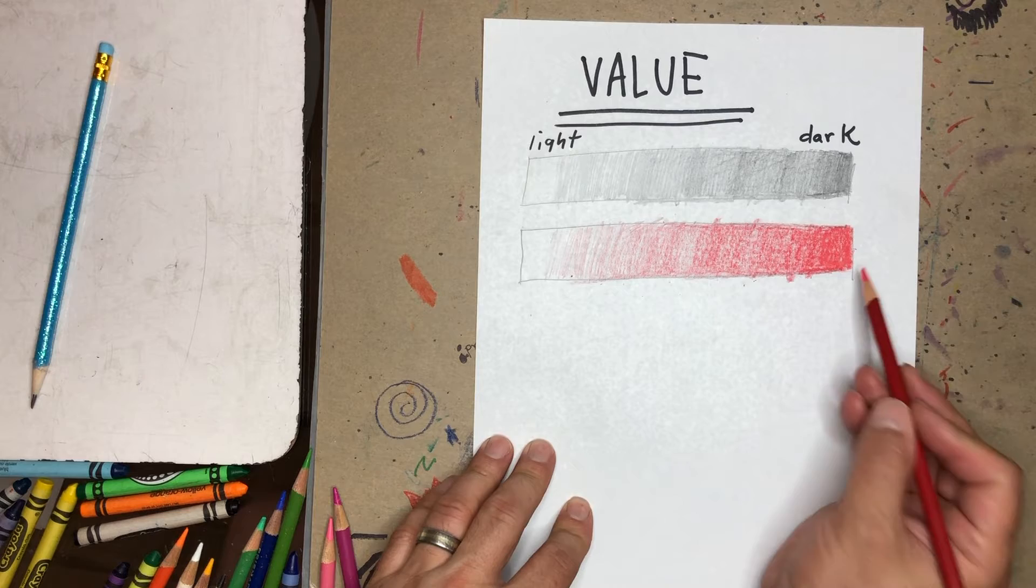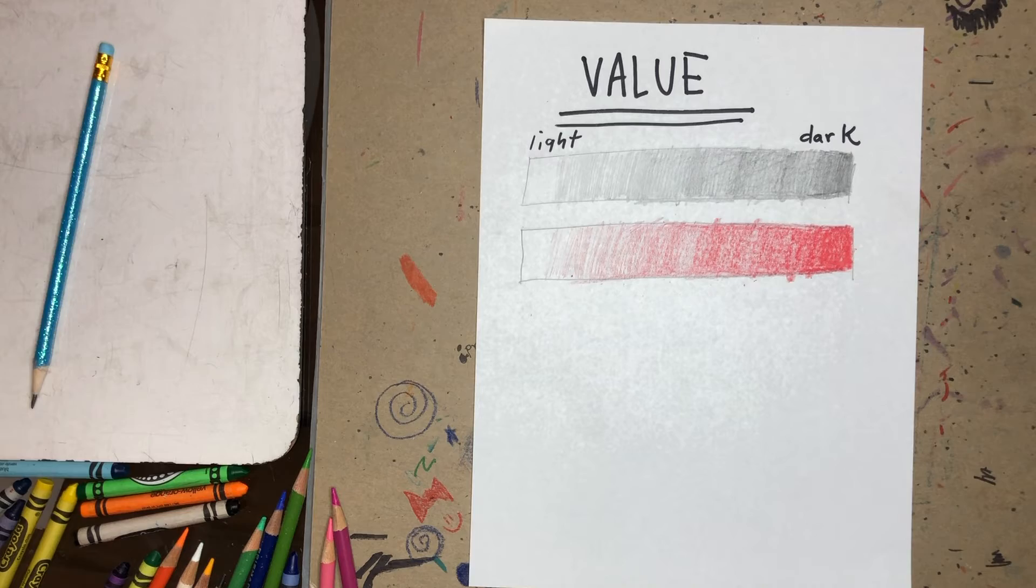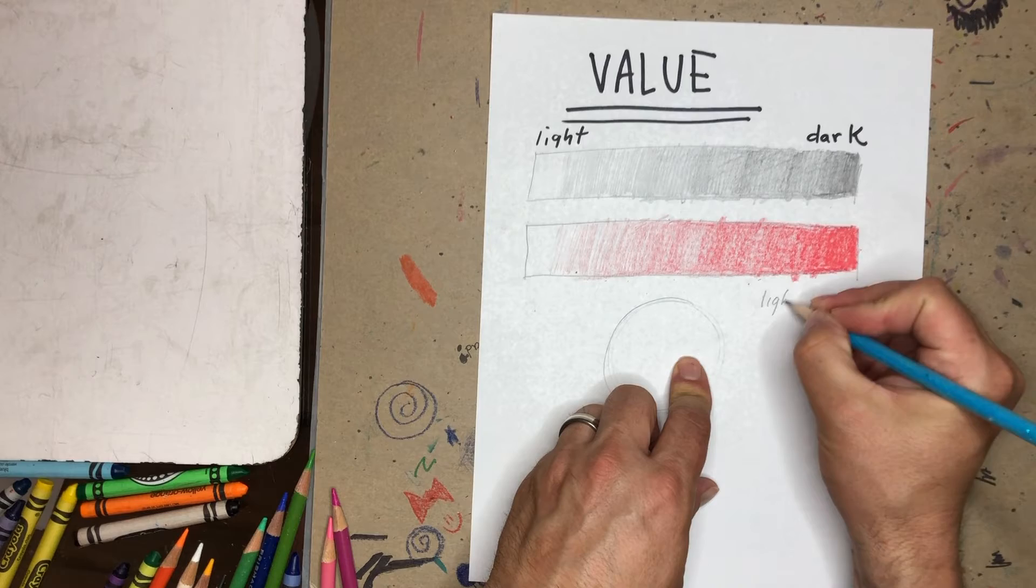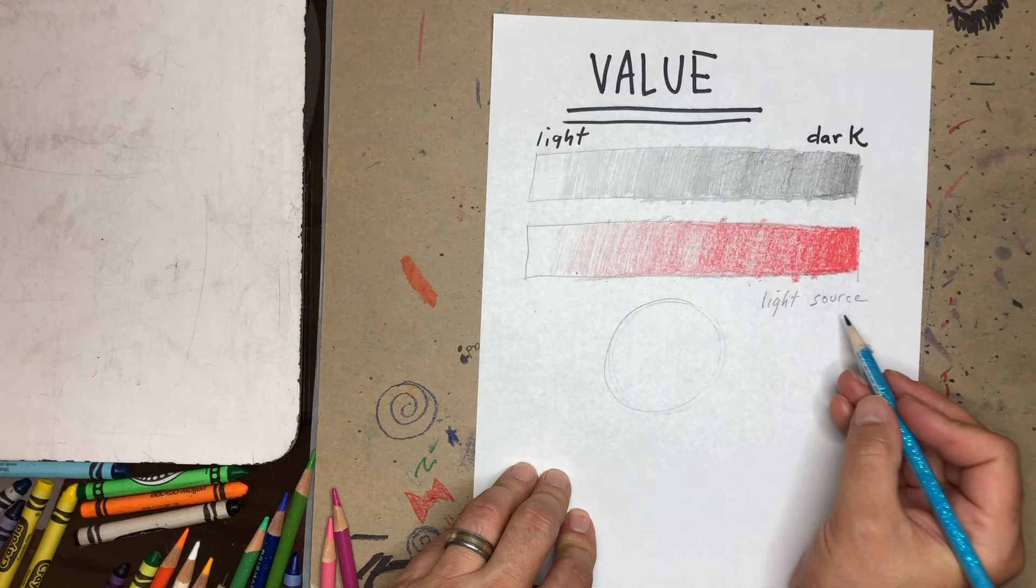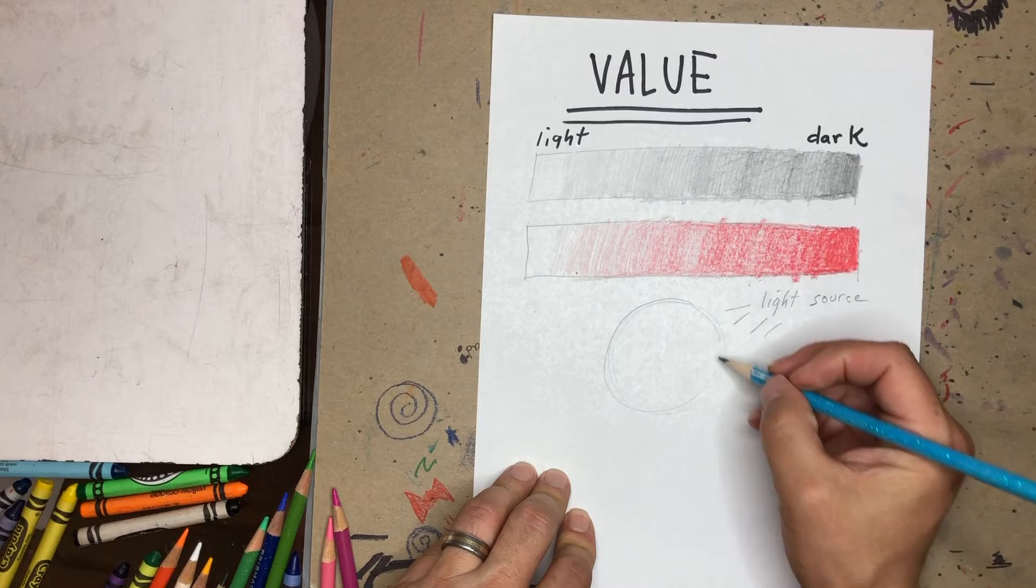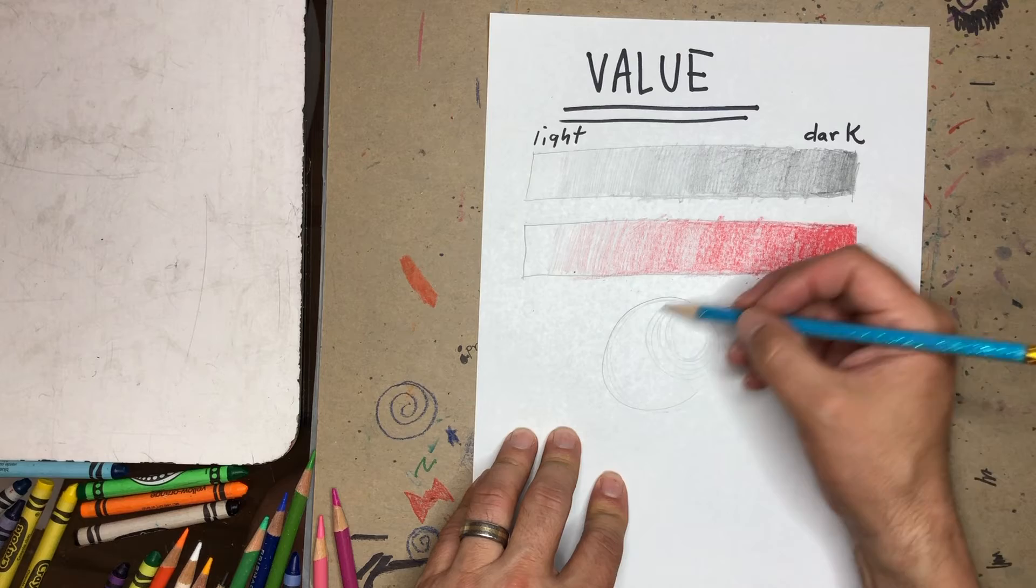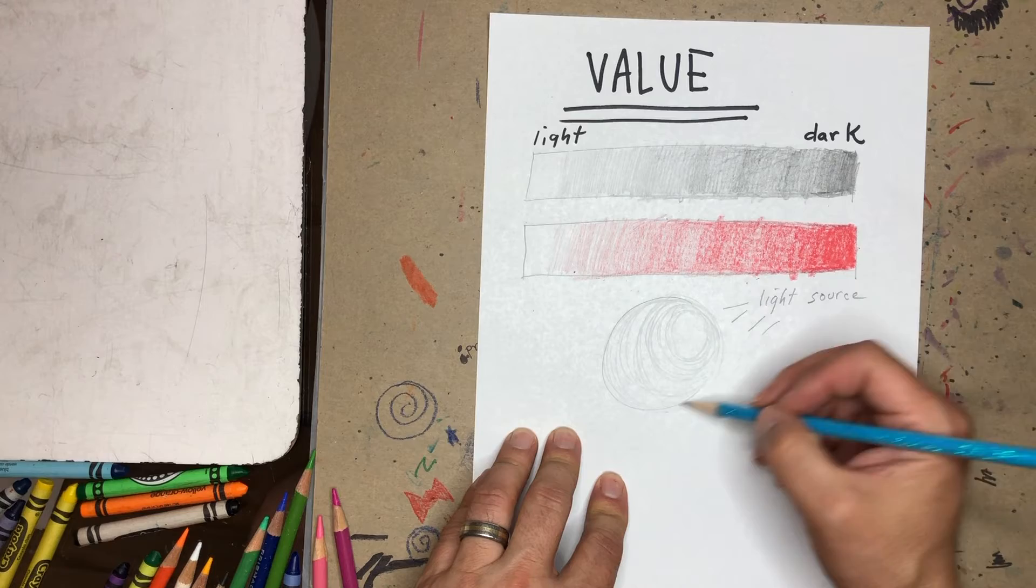Now, we can also show, imply value or lightness and darkness with shapes or forms. And I can draw this shape to look like a ball or a sphere. And I'm going to say over here on the right will be where the light source will be coming from. And so that's going to be the brightest part on my ball or sphere. And as I lightly go around and around, and as I get further away from that spot, the drawing would be darker and I would apply more pressure.